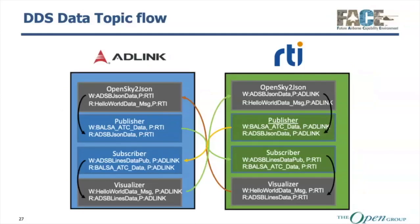This demo actually had two computers, each running all four applications: a console app, OpenSky to JSON, a publisher, a subscriber, and a visualizer. Because DDS has a great wealth of quality services — one of them being partitions — we partitioned the data. The published data was published onto the RTI partition, which the lower two apps on the right for RTI received, only from the RTI partition. And vice versa: RTI had a publisher on the ADLink partition, and the ADLink subscriber and visualizer received data only from the ADLink partition.